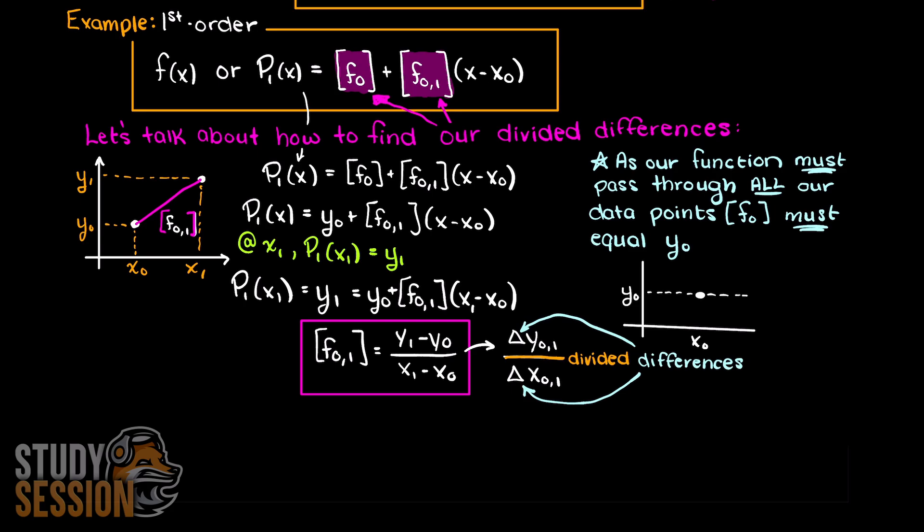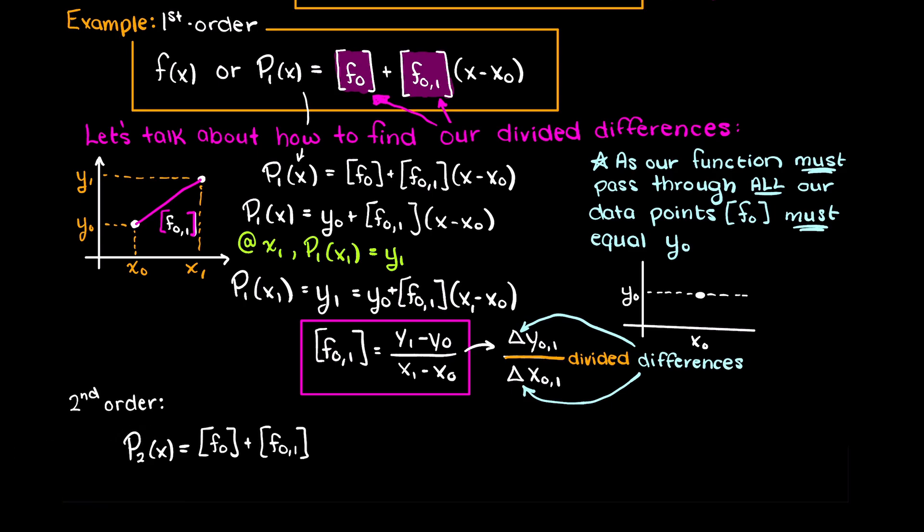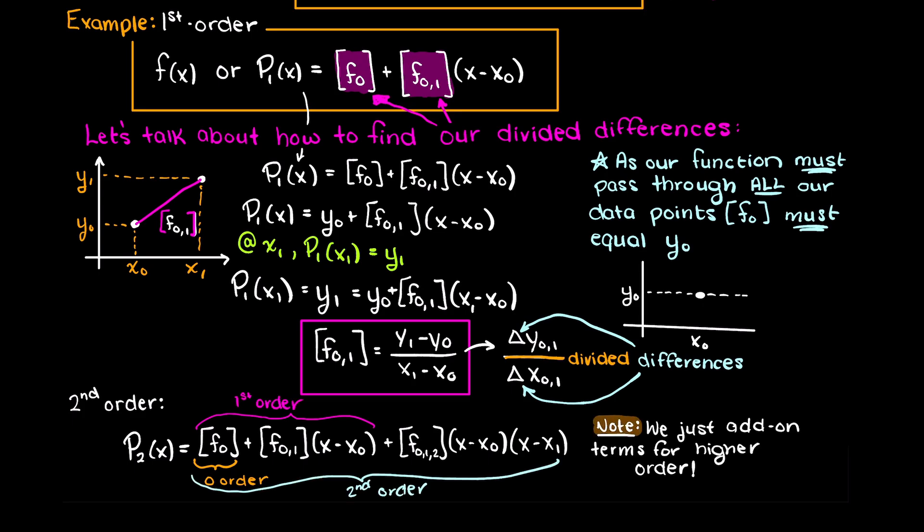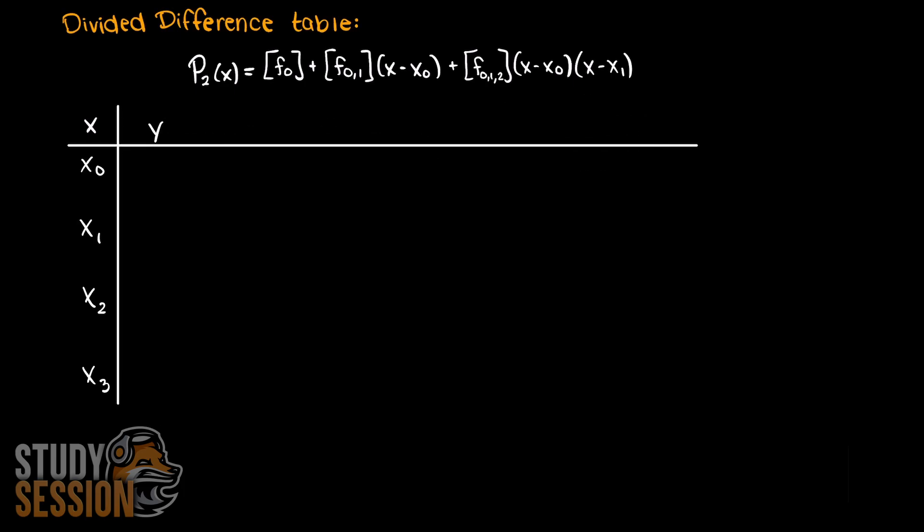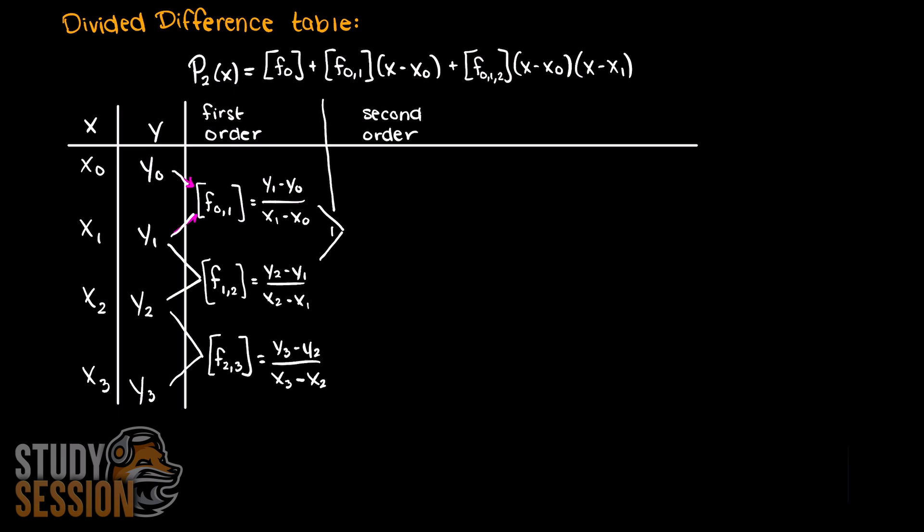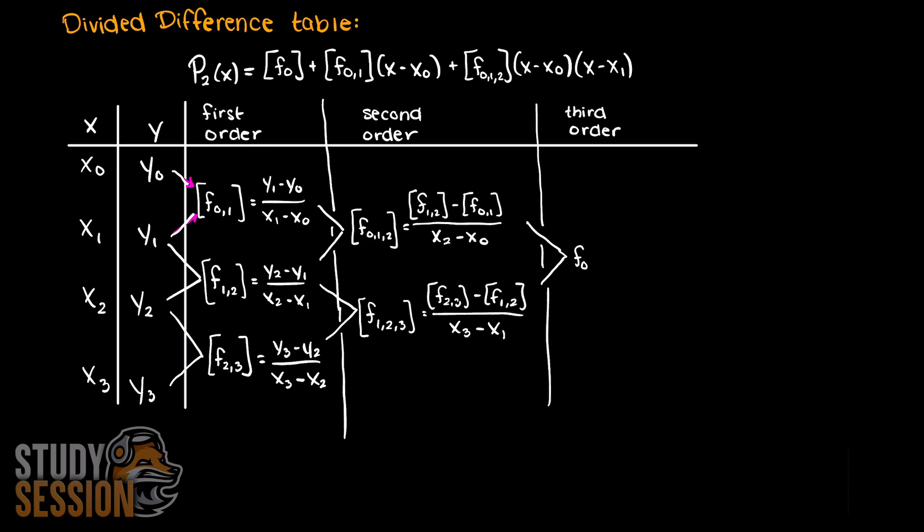The biggest advantage to Newton's polynomials is that they are recursive, meaning if we wanted to add a data point to our interpolation function, we do not need to redo all the math again. We can just add in a new term on the end of our Newton polynomial, and this allows us to create what are called divided difference tables, that utilize this recurrence relationship that I mentioned earlier. As you can see, our new middle value is just continually taking the divided difference of the two lower orders that construct it.